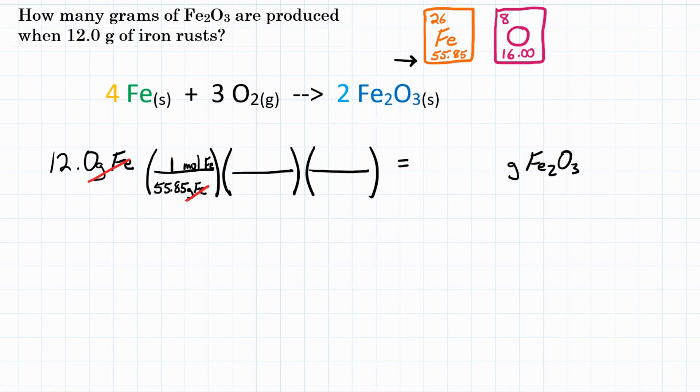So now we're at moles of iron. And we can now go to moles of iron oxide. We can go moles to moles using our mole ratios. So we're going to get rid of moles of iron and be left with moles of Fe2O3. What's the relationship between moles of rust and moles of iron? That is going to be our coefficients. For every four irons, for every four Fe's that react, we're going to get two rusts, two Fe2O3s.